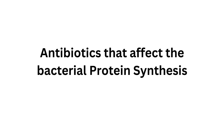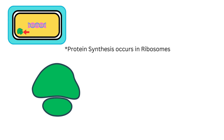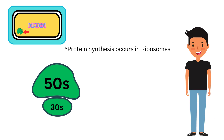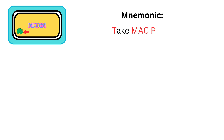Now let's move on to antibiotics that interfere with protein synthesis. Protein synthesis happens in the ribosomes. Bacterial ribosomes are made up of 50S and 30S subunits, and some antibiotics act on these subunits to stop bacterial protein synthesis. These antibiotics will not affect protein synthesis in our body, as human ribosomes are made up of 60S and 40S subunits and are different from bacterial ribosomes.